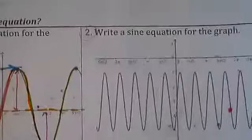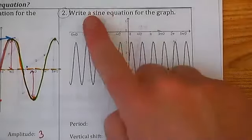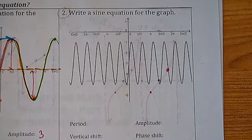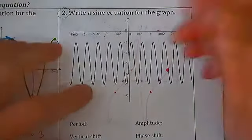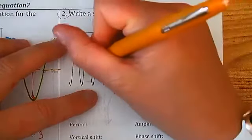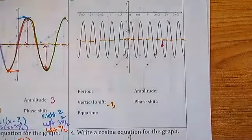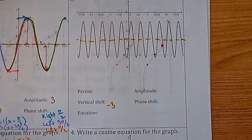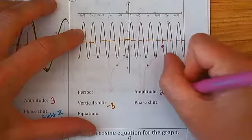Let's try number two, which we'll do together — this is a sine graph. Same process: I like to identify my midline first, which looks to be −3, and that's known as the vertical shift.